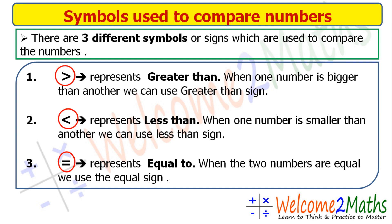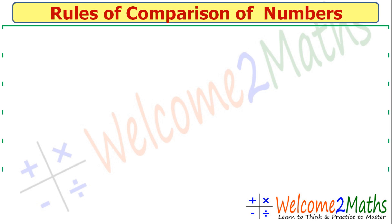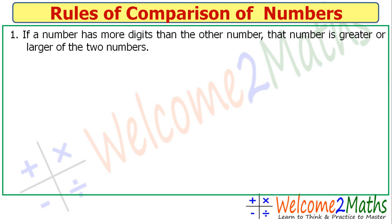Now the most important thing — the rules of comparison of numbers. Rule number one: if a number has more digits than the other number, that number is greater. For example, 24 is a two-digit number and 9 is a single-digit number, so obviously 24 is greater than 9.